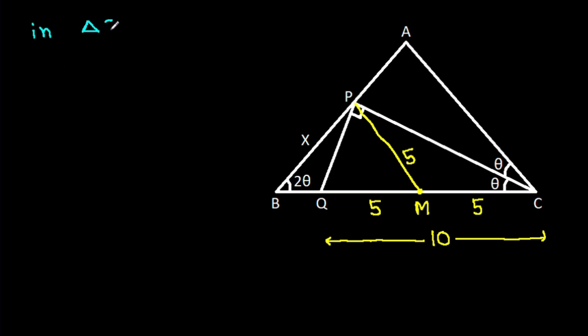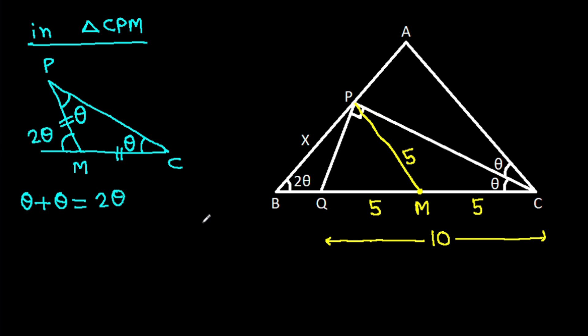In triangle CPM, we have CM is equal to PM, that means these two angles will be equal, and this angle and this angle is theta, and this angle will be theta plus theta, that will be 2 theta.